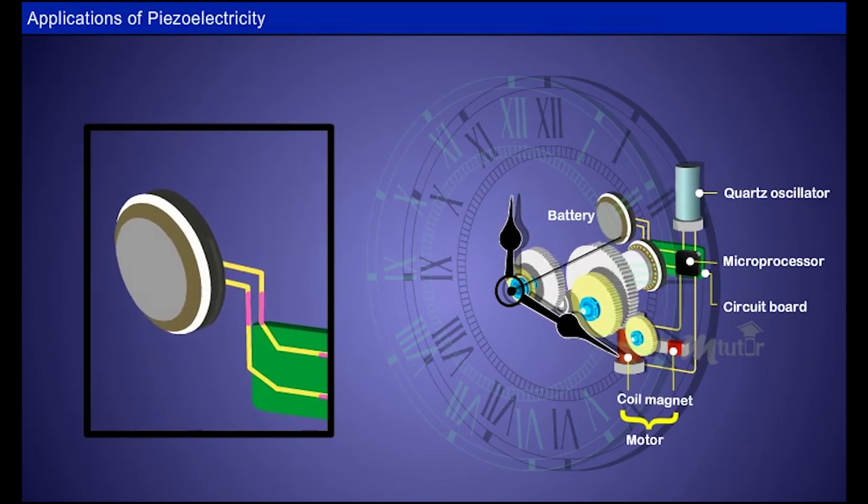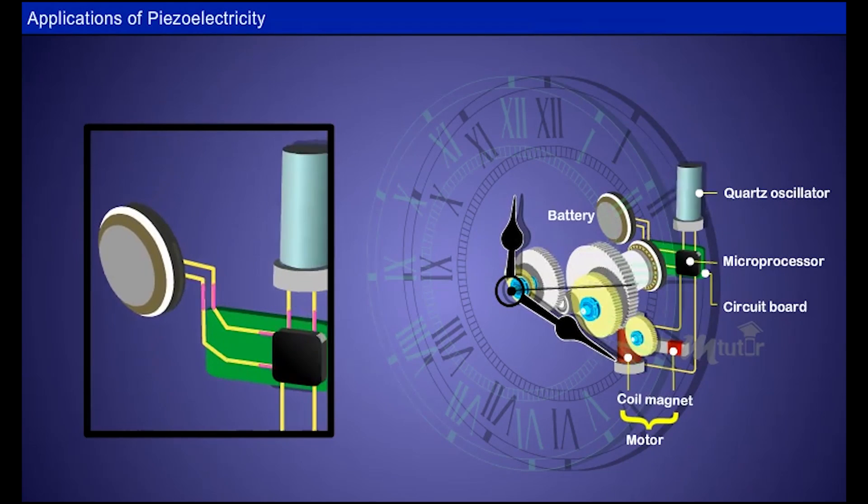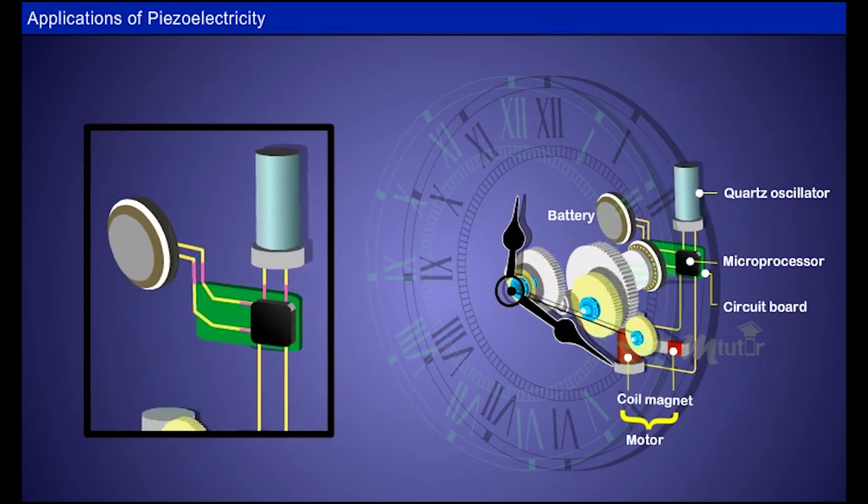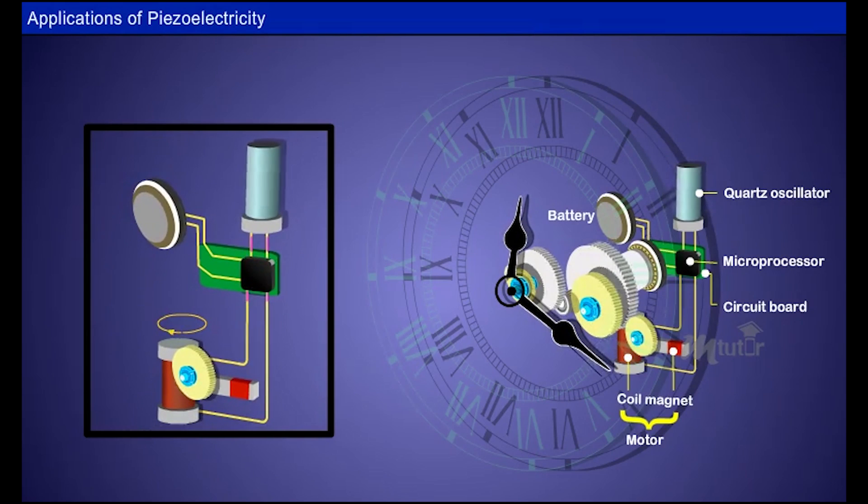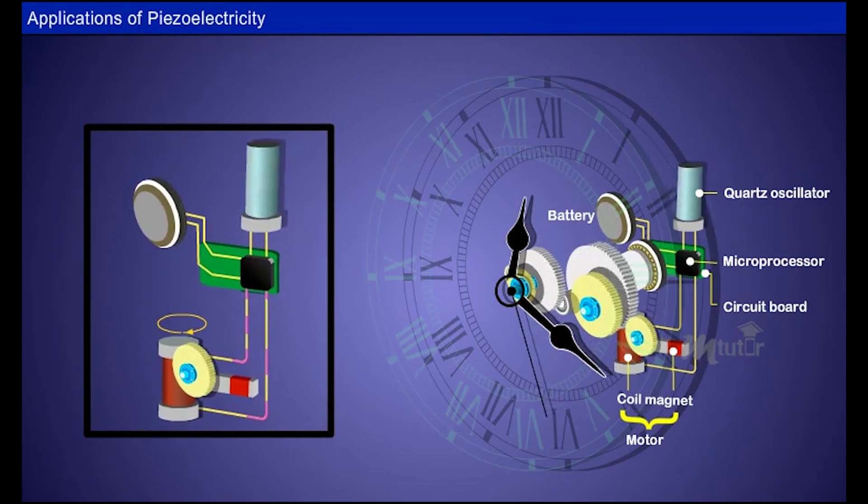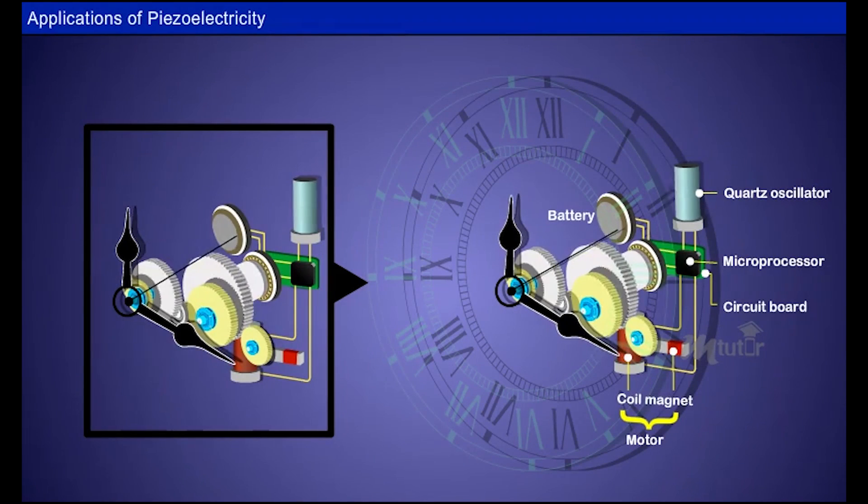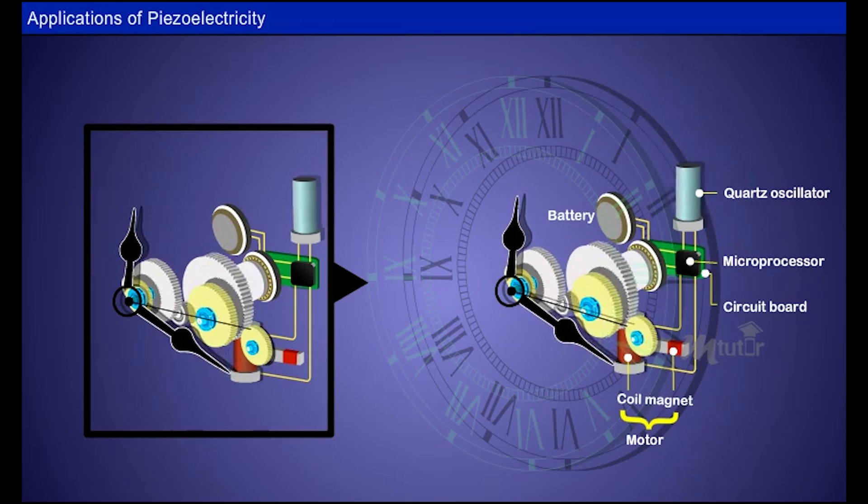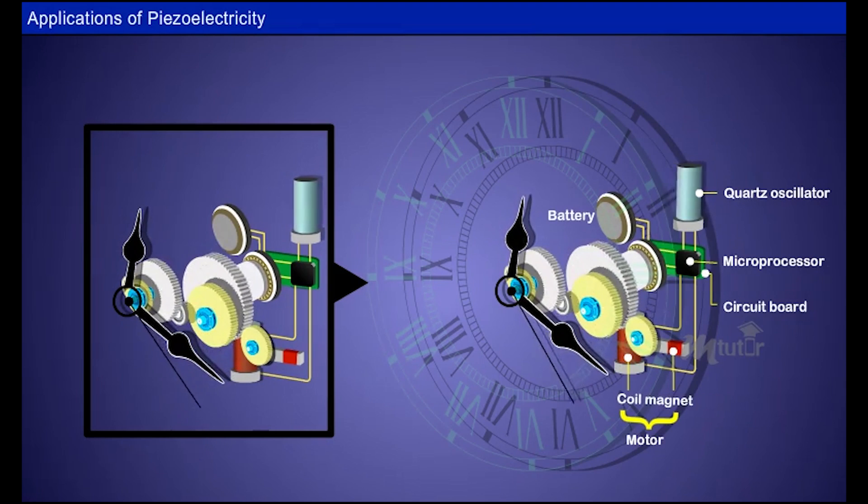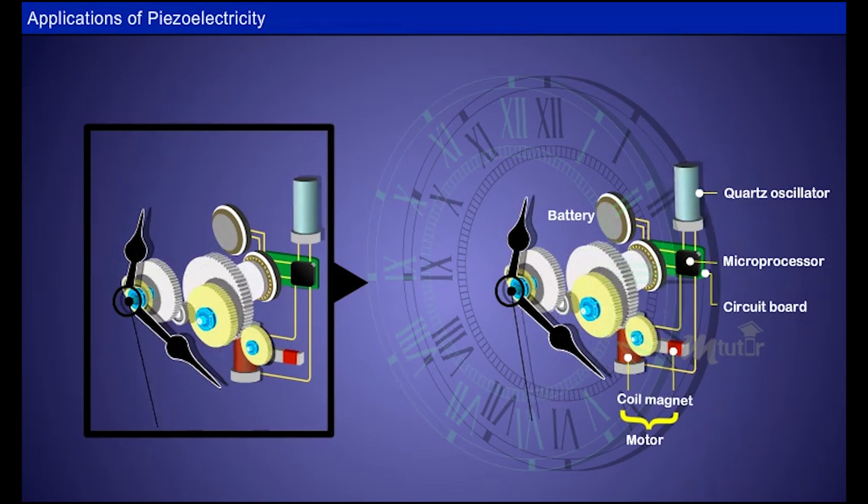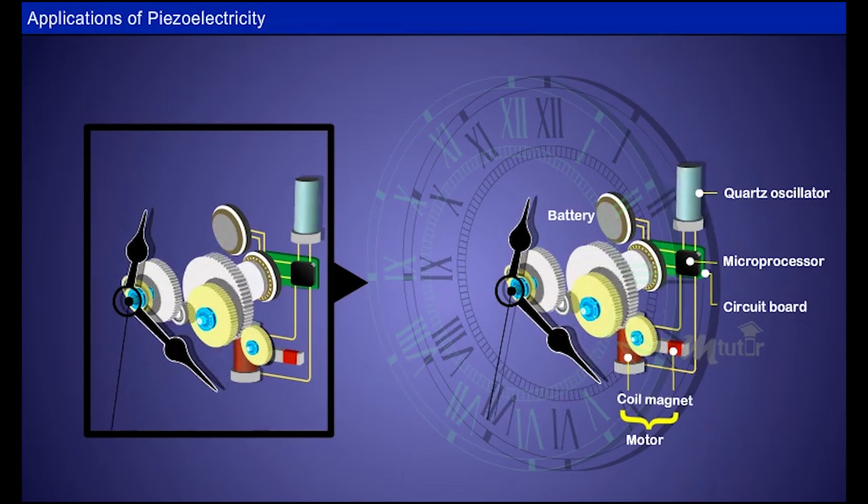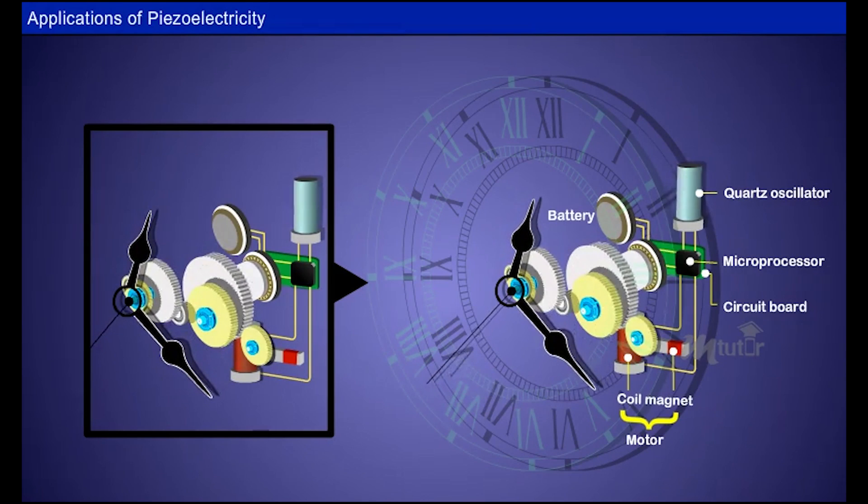The battery electrifies the quartz crystal so that it begins to vibrate. A microchip detects the number of vibrations and turns them into a fixed number of electric pulses. The electric pulses drive the stepping motor, and mechanical movement of the motor turns the cogs which rotate the hands of the clock to show the time. This piezoelectric effect of quartz allows for incredibly accurate measurement.